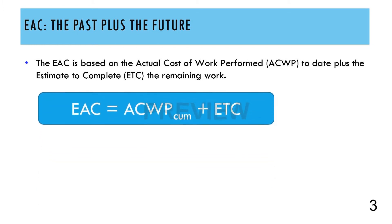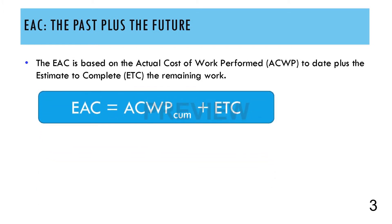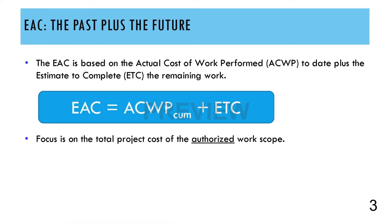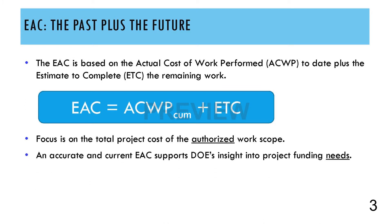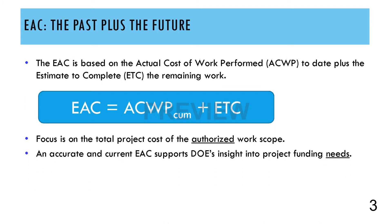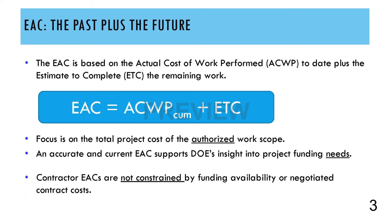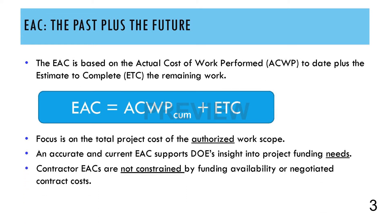The EAC represents the total project cost for all authorized work scope. Work that is anticipated or not yet on contract is not included in the contract EAC, but should be in the FPD's EAC. An accurate and current EAC supports DOE's ability to monitor project funding. However, contractor EACs are not constrained by the availability of funding or the negotiated contract costs.